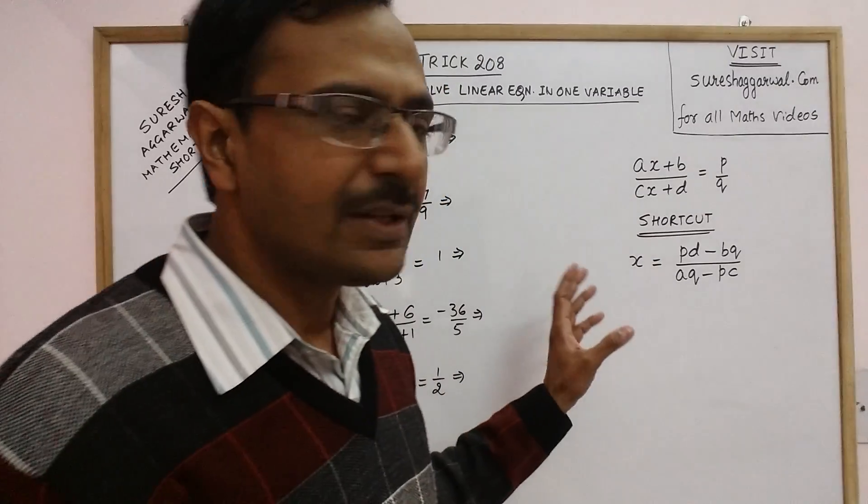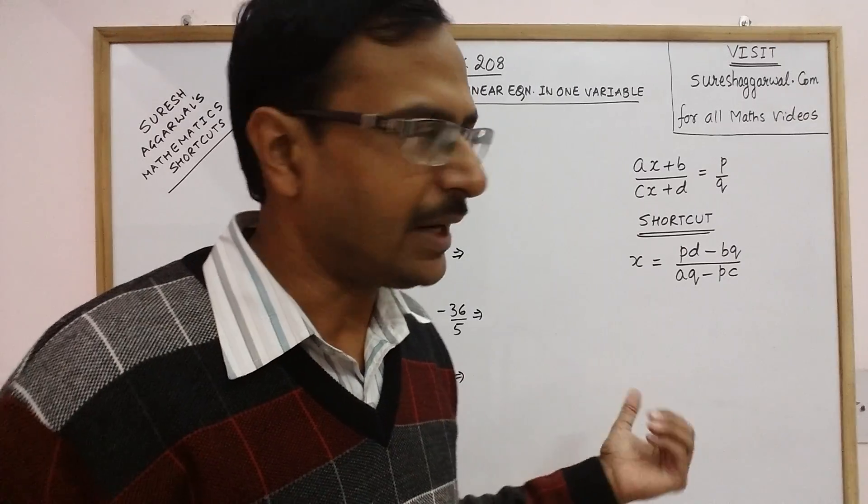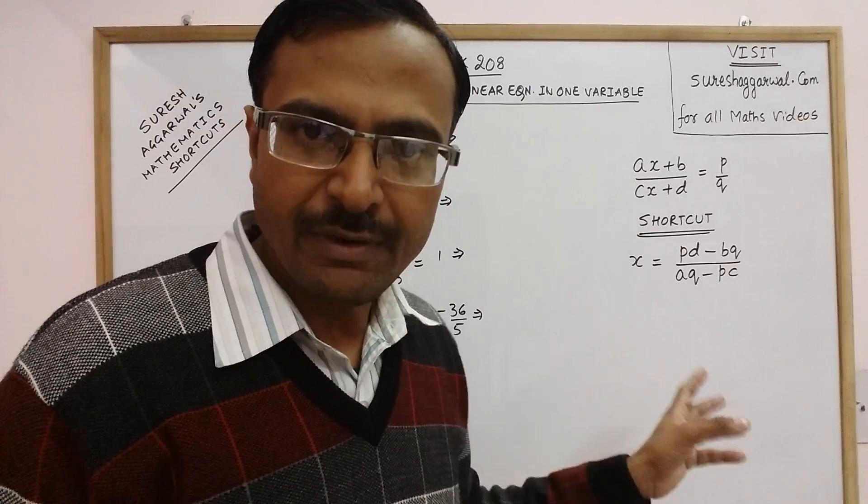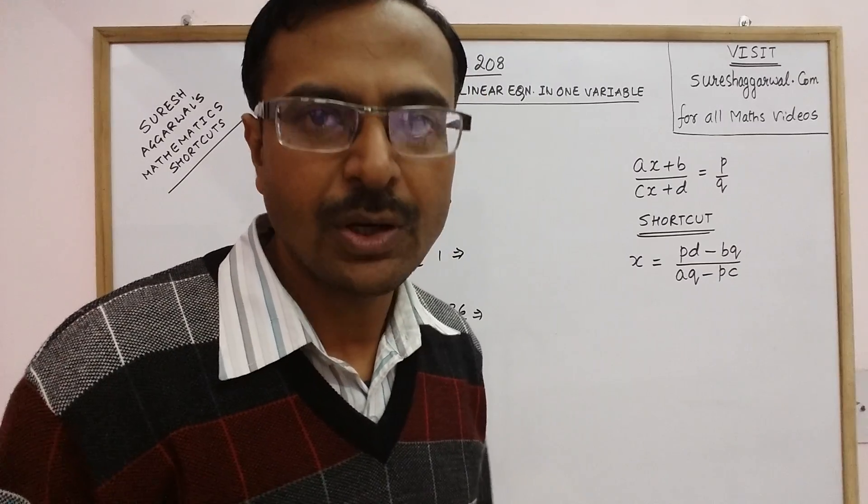So obviously the traditional method will tell you to cross multiply this and then to combine the like terms and then simplify them to get the value of x. But through a shortcut you can solve this in one step only.